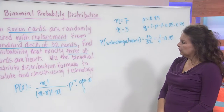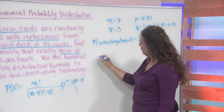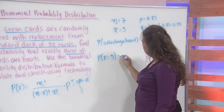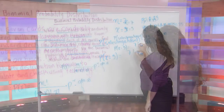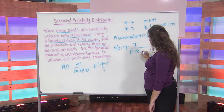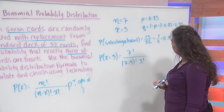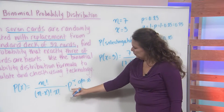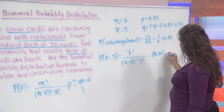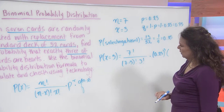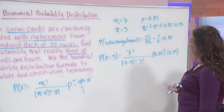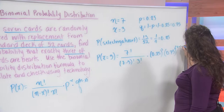Now we have all of the components needed for our binomial probability distribution formula. We want to find the probability that x is equal to 3. So that's 7 factorial in the numerator over, in the denominator, 7 minus 3 factorial times 3 factorial. We're going to multiply that by p — recall, 0.25 — raised to the power of x, which is 3, and then our q, which is 0.75, raised to the power of n minus x, so that would be 7 minus 3.